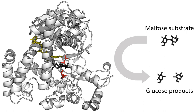Some enzymes are used commercially, for example in the synthesis of antibiotics. Some household products use enzymes to speed up chemical reactions. Enzymes in biological washing powders break down protein, starch or fat stains on clothes, and enzymes in meat tenderizer break down protein.